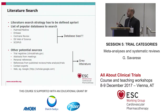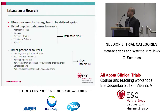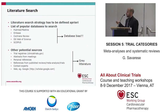It's also possible to include evidence from trial registries, for example clinicaltrials.gov, where there are results and numbers on trials before getting the final publication of the study. We can also check abstracts from meetings, personal references, references from published reviews, meta-analyses and trials, and even Google. This is called gray literature.